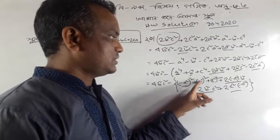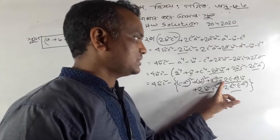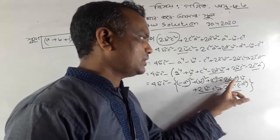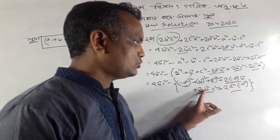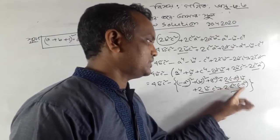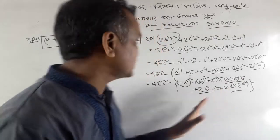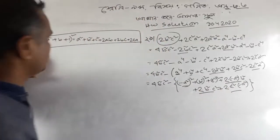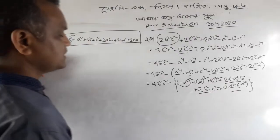A squared plus b squared plus c squared plus 2ab plus 2bc plus 2ca. This means that a plus b plus c, all squared. This means that a plus b plus c, squared.